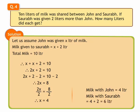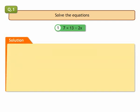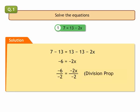Now, let us solve problems from problem set 1. Question 1: Solve the equations. 1. 7 is equal to 13 minus 2x. Subtracting 13 from both sides of the equation, we get minus 6 is equal to minus 2x. Dividing the equation by minus 2 on both sides, we get x is equal to 3.